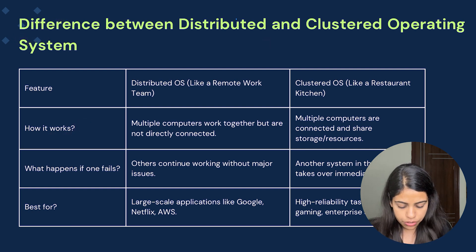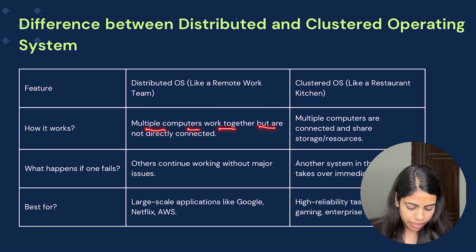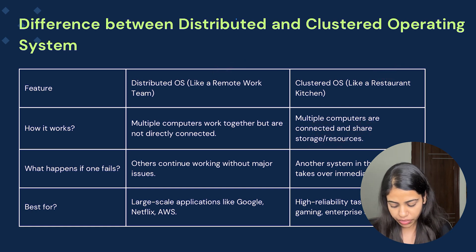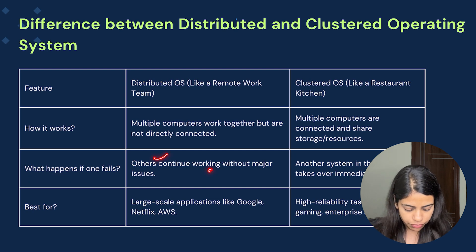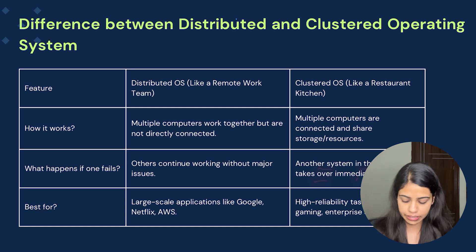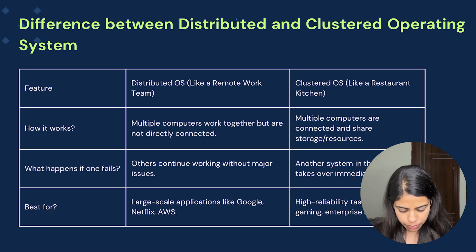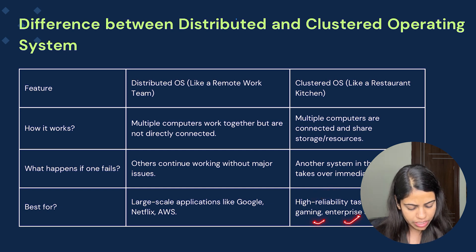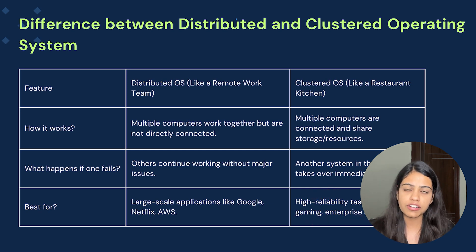Key differences: in how it works — distributed OS has multiple computers working together but not directly connected, while clustered OS has computers connected sharing storage resources. If one fails — in distributed OS others continue with no major issues; in clustered OS another system immediately takes over. Best for — distributed OS suits large-scale applications like Google, Netflix, and AWS; clustered OS suits high-reliability tasks like banking, gaming, and enterprise servers.